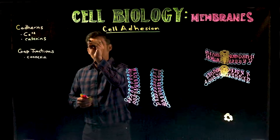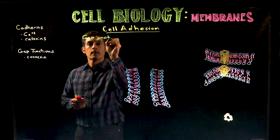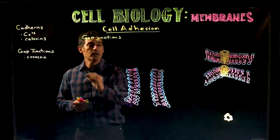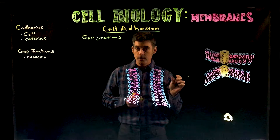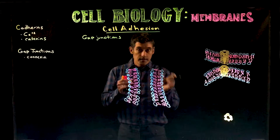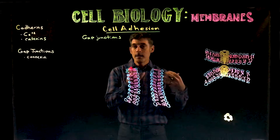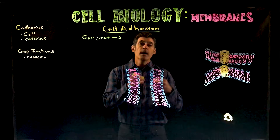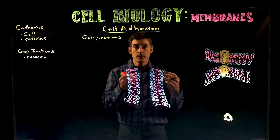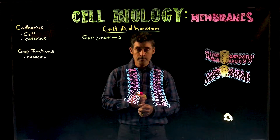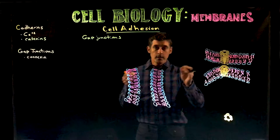Gap junctions are going to be our first topic. Gap junctions are structures necessary for cells to create a tissue. For a single cell — which is mostly what we've been talking about — but in multicellular organisms, cells are joined together to make tissues, then organs, organ systems, and the whole organism. Different cells stick together in different ways.